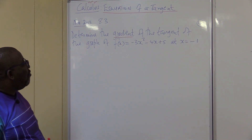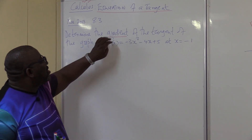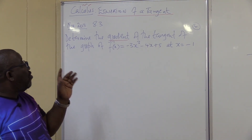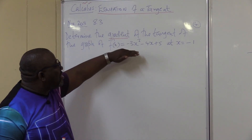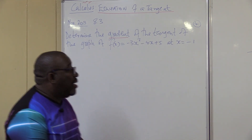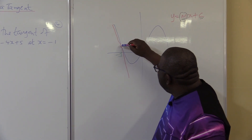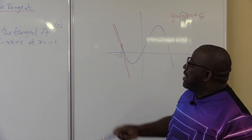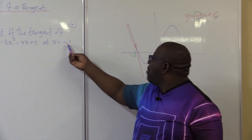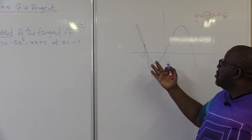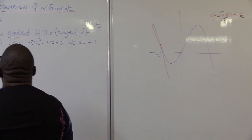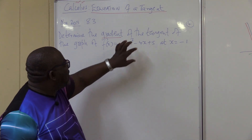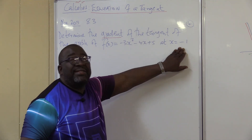Determine the gradient of the tangent of the graph. We're not given anything about this tangent, but we're given that this tangent is a tangent at this graph. I don't even know how that graph will look, but I know that this tangent and this graph will be the same at the particular point where x is equal to minus 1. In my examples, I made it equal to minus 3 so that we can have a picture of what is going on. So there's a graph we're given which is a cubic function.